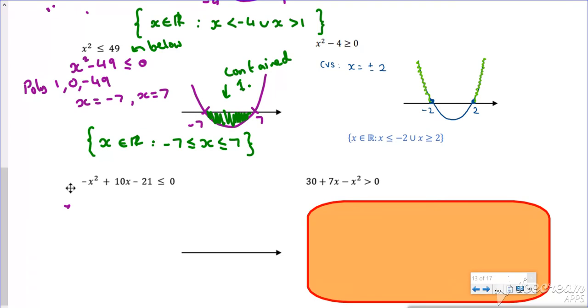One, so if you look at this one it's minus x squared. The others have been plus x squared, so it's going to be an n-shaped curve when we do it. I'm still going to do it, I'm just going to put it in as I see it. So in poly I'm going to put minus 1, 10, minus 21.